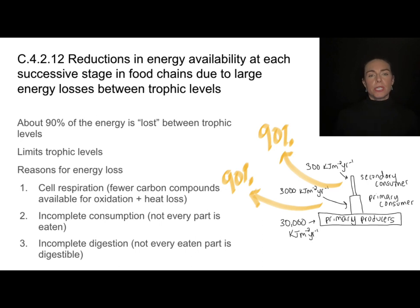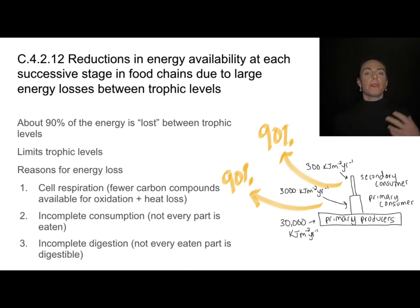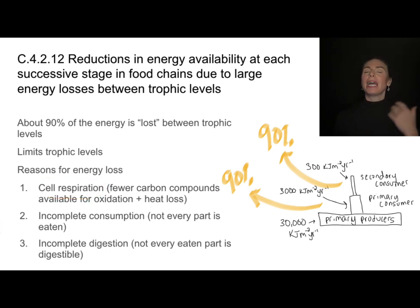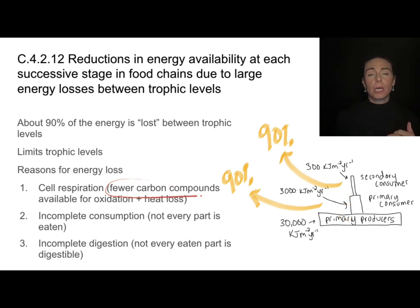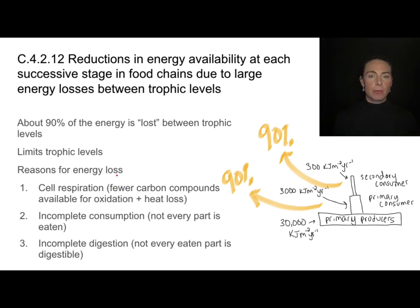What are the reasons for this 90% energy loss? One reason is cell respiration. When organisms do cell respiration, we convert carbon compounds into ATP, but there is also a massive amount of heat loss. Heat is generated by cell respiration. Warm-blooded animals can utilize that heat, but in general it's not a usable form of energy — you can't use it for locomotion or to make your own carbon compounds. At each level, there are fewer and fewer carbon compounds available because many have been oxidized and that energy has been lost as heat.